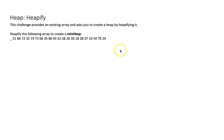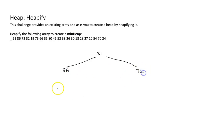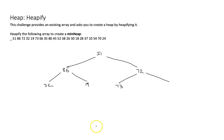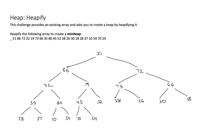Here we have the elements. I start lining them up level by level, just the way they are in the array. So my root is going to be 51. My next elements are 86 and 72. Now we have more children: 32, 19, 73, 66, et cetera. All elements have been added level by level in the order in which they were in the array.